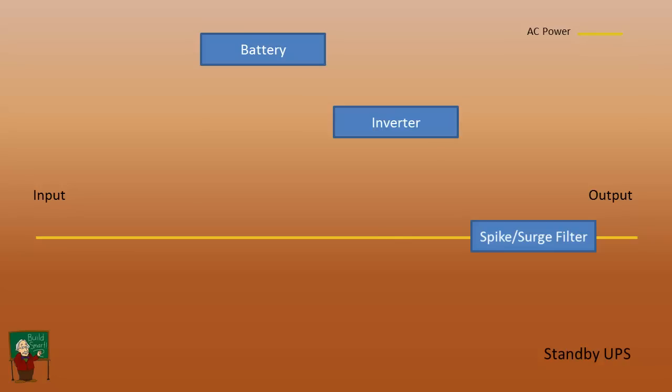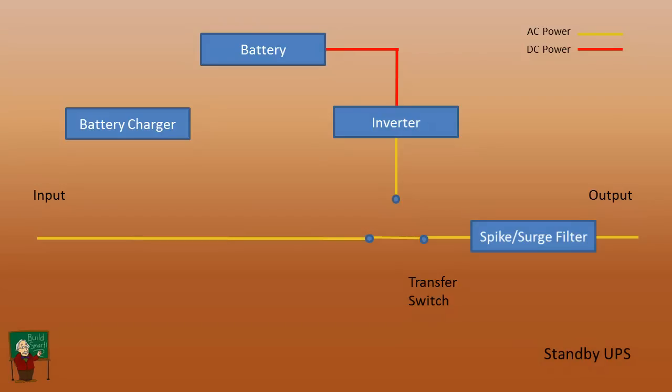So we'll start with the battery and the inverter to convert that DC voltage from the battery to AC. Put those together. And now we'll put a transfer switch in line. Connect that to the inverter. Put in a battery charger to charge the battery. Connect that to the power coming in and connect that to the battery.